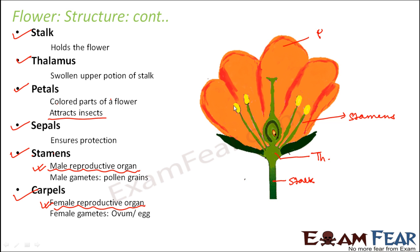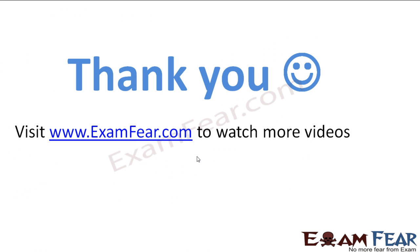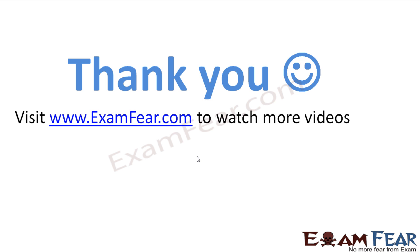Now you understand that the most important roles among the parts of a flower are played by the male and female reproductive organs — that is, the stamens and carpels. Therefore we will spend some more time to understand the structure of stamens and carpels in a little more detail.